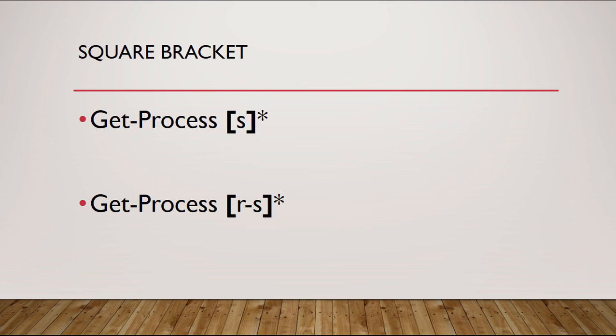Here's a square bracket example. One of the most useful applications of the square bracket is to filter out properties beginning with a specific character. In this particular case, we've got a get-process, and it's filtering out just processes that begin with the letter S. Or we could do the R through S range.